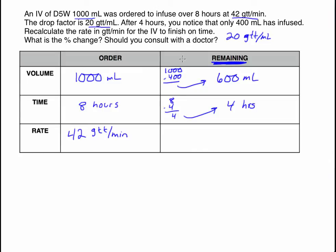The rate is not going to be given to us — this is the main piece of information we're calculating. We're recalculating the rate in order to finish on time. We need 600 milliliters to infuse over 4 hours. Using a dimensional analysis approach: 600 milliliters over 4 hours gives us that volume-over-time ratio. I can convert milliliters into drops using the drop factor — every milliliter is 20 drops — and convert hours to minutes since every hour is 60 minutes.